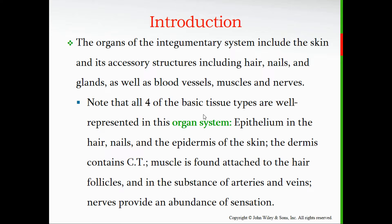Epithelial tissue will make up the hair, nails, and the epidermis — the outer layer of your skin. The dermis contains connective tissue. Muscle is also found in the dermis, attached to the hair follicles, and in the arteries and veins you'll find smooth muscle, especially in the veins. Nervous tissue is in abundance for the different touch receptors, free nerve endings, and the various corpuscles for temperature change, pressure, and pain sensors.